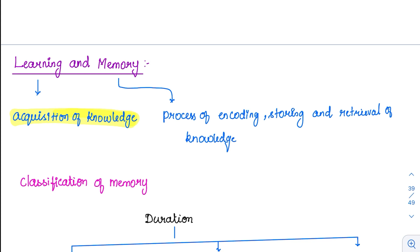What is memory? Whatever knowledge we have acquired, we are able to encode it, store it, and retrieve it whenever we need it. For example, you are encoding and storing it in the brain, and when needed, you retrieve it. So this encoding and everything is called memory.